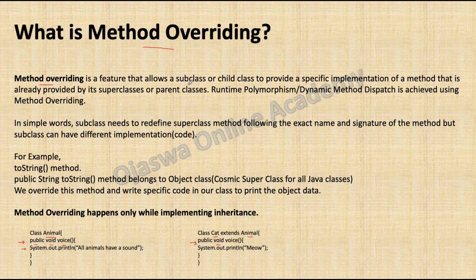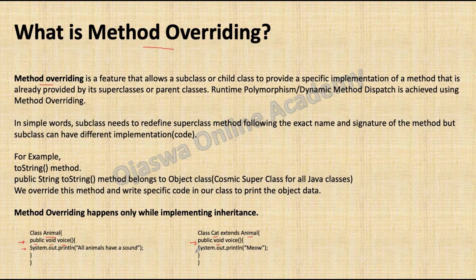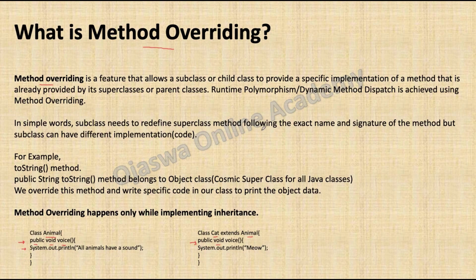So what is method overriding? Method overriding is a feature that allows a subclass or child class to provide a specific implementation of a method that is already provided by its superclass or parent class. When you override the method, you can redefine it — that means if the superclass has given some code, the subclass can change the code written for the method, but it cannot change the signature. Method overriding is same signature but different implementation. Runtime polymorphism or dynamic method dispatch is achieved by using method overriding.